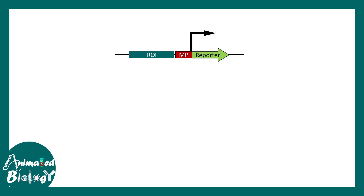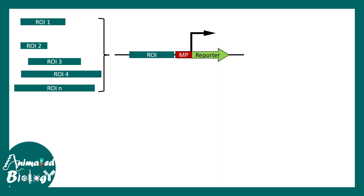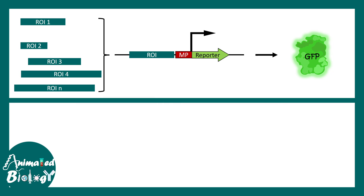In an enhancer trap construct, there is a minimal promoter (shown in red) that is not strong enough to drive transcription on its own, plus a reporter such as GFP. A region of interest — different fragments of DNA upstream of a gene — can be cloned into this construct. If placing that element results in augmented transcription, that region of interest might be an enhancer. The degree of GFP or reporter expression is the readout for enhancer activity.